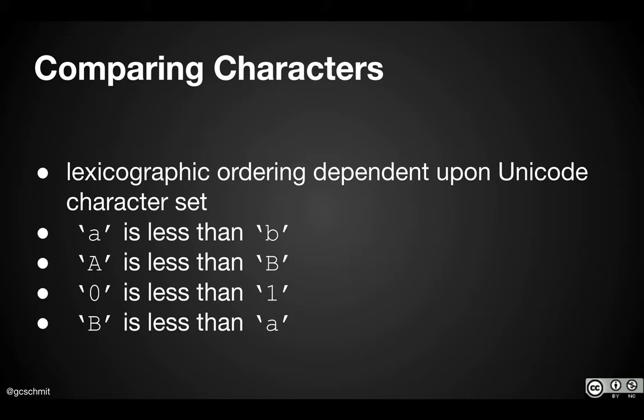It's basically alphabetical order with one small twist. The letter A comes before B — that's alphabetical. Capital A comes before capital B — also alphabetical. The digit zero comes before one. It's really just one bullet that can trip us up, which is why we don't call it alphabetical order — we call it lexicographic order. The reason is capital B is less than lowercase a.